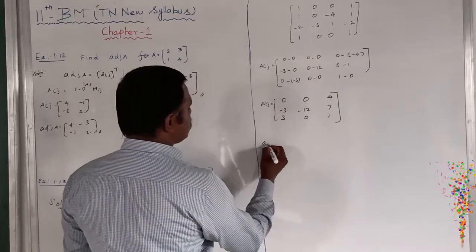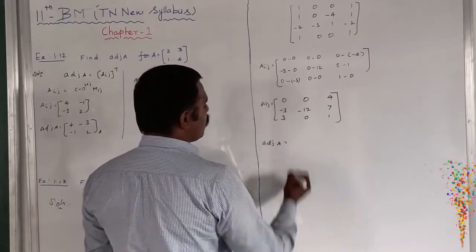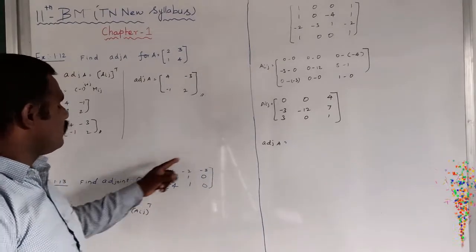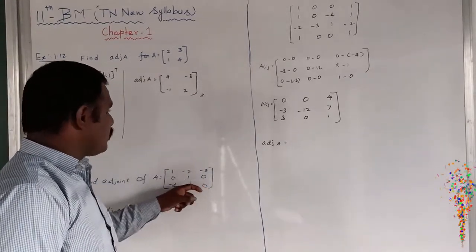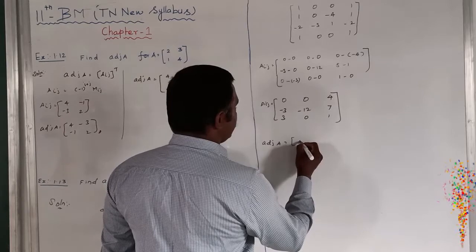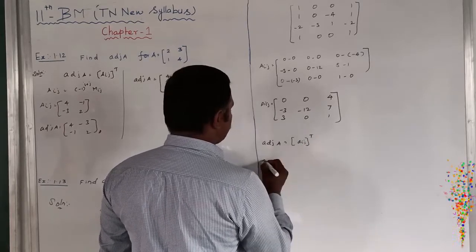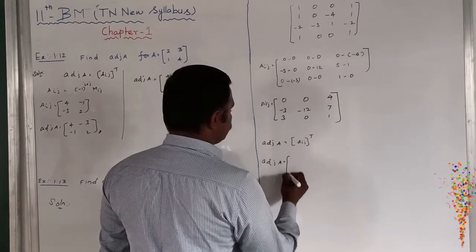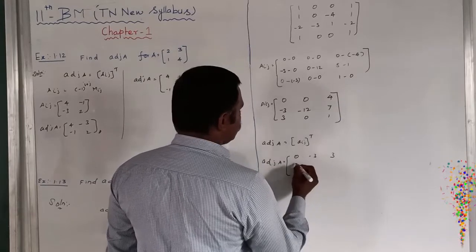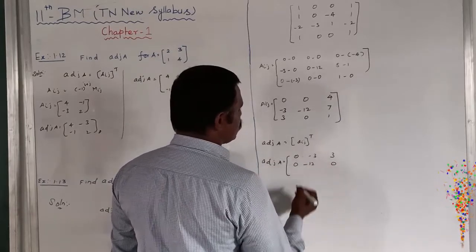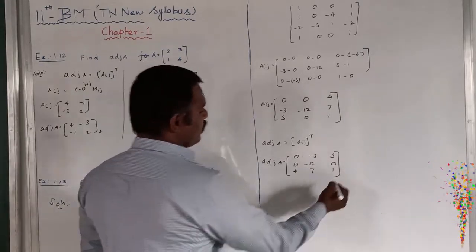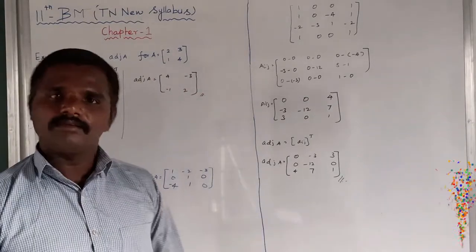Therefore, the adjoint of A is found by this shortest method — finding the cofactor without finding the minor. Now we take the transpose. Row changes to column and column changes to row. So adjoint of A equals [0, minus 3, 3; 0, minus 12, 0; 4, 7, 1]. This is the adjoint matrix of the given 3×3 matrix A.